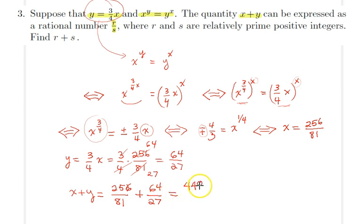Now the question is asking for the sum of the numerator and the denominator. Therefore from here we would get 448 plus 81 equals...